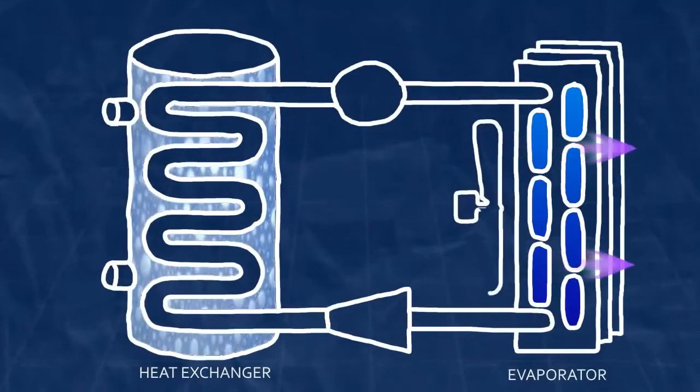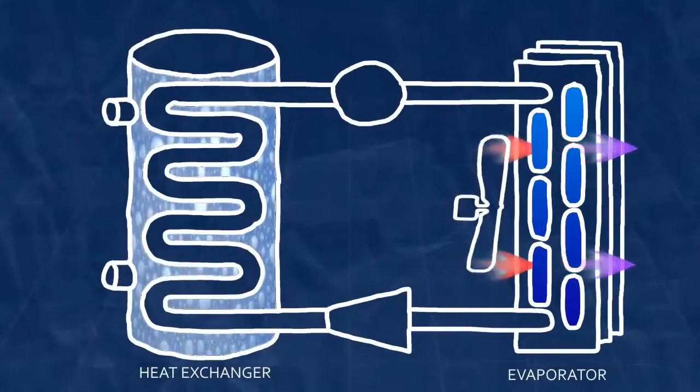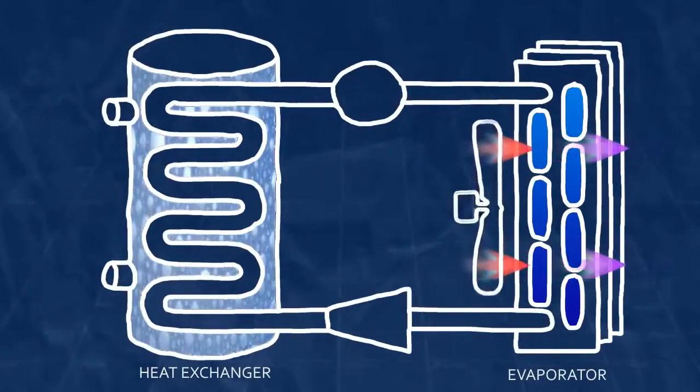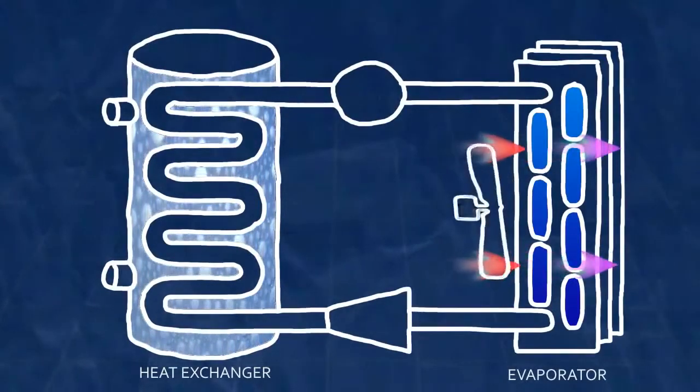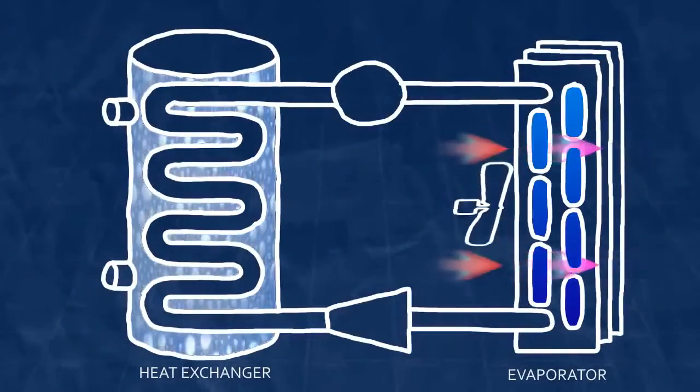A fan amplifies the absorption by increasing the flow of room air over the evaporator. The heat added to the refrigerant causes its temperature to rise and the fluid to become a warm, low-pressure vapor.